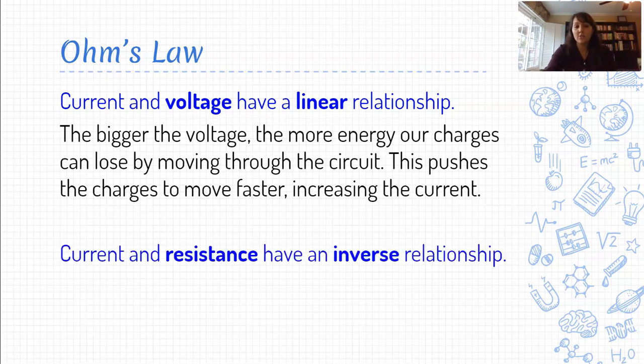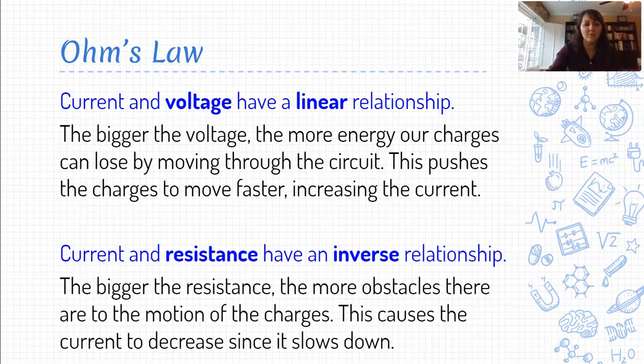Now, by contrast, current and resistance have an inverse relationship, meaning that as our resistance goes up, our current tends to go down. And this just kind of gets at the basic idea of what resistance is all about. So resistance is trying to slow down our current. So the more resistance we have, the more obstacles we have for the current to try to get through, the slower our charges are going to be able to move, and therefore, the lower our current becomes.